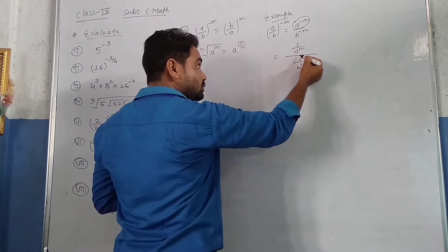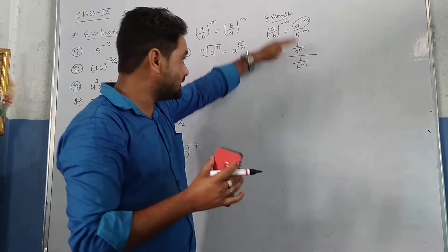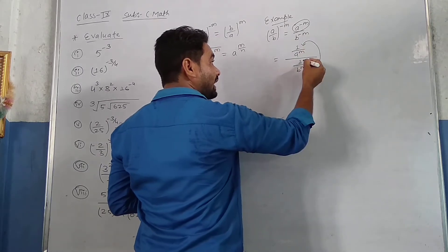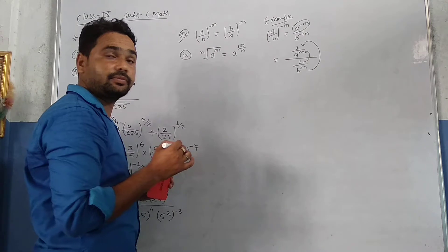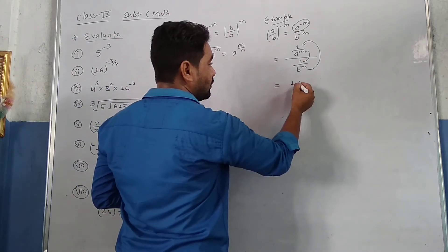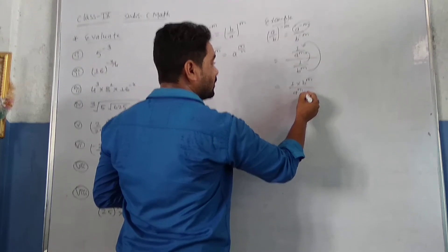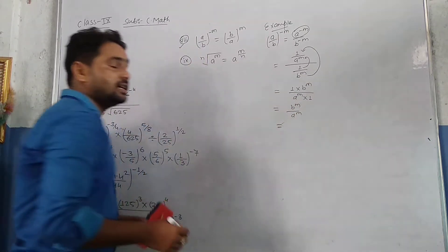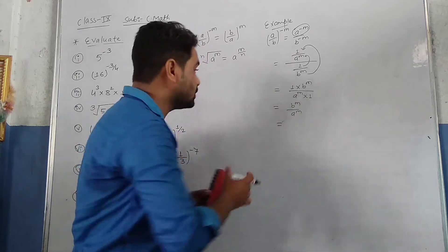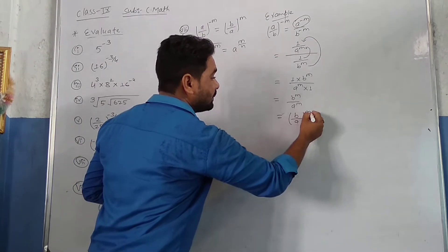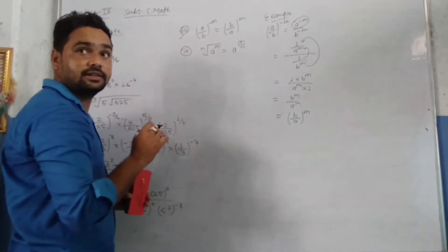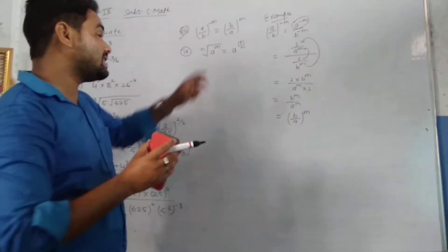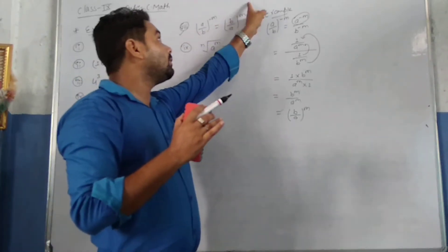Now, we get that: 1 upon A power M, divided by 1 upon B power M. The fourth term goes to the first, and the second to the third. So we get 1 into B power M, upon A power M into 1 — that is B power M upon A power M. If the powers are the same, we can write B upon A, whole power M. Directly, we can interchange the bases and keep the power positive.